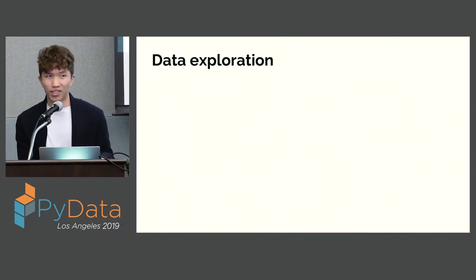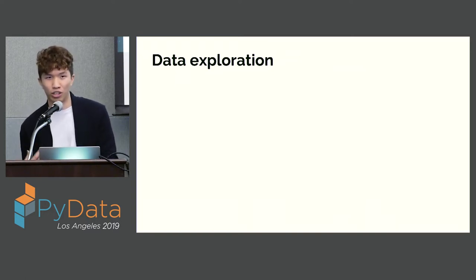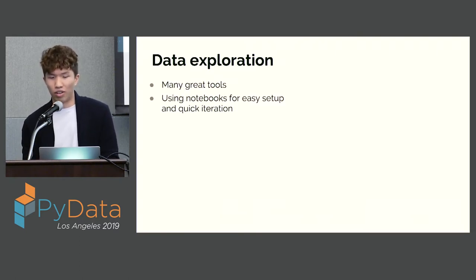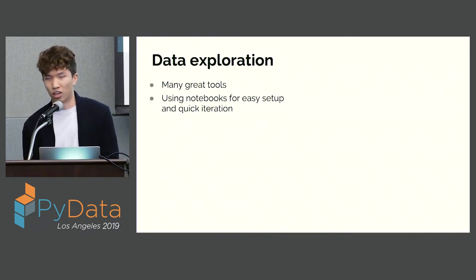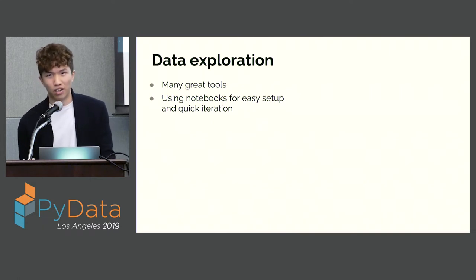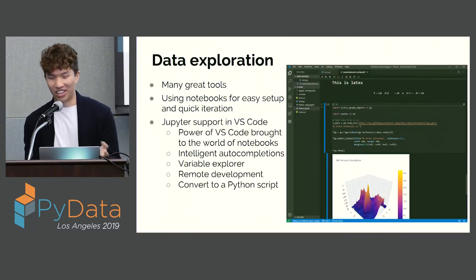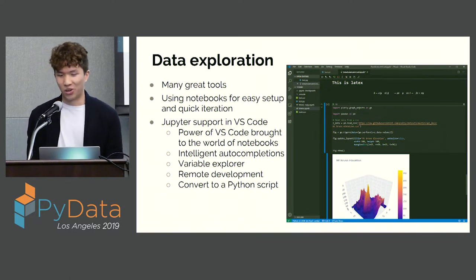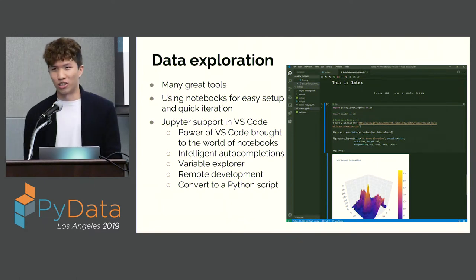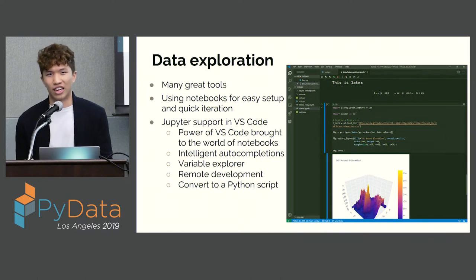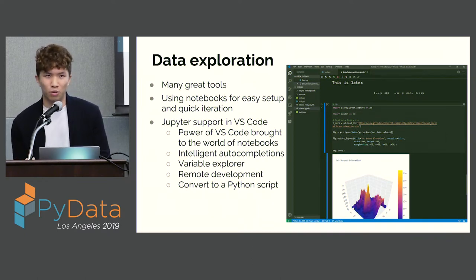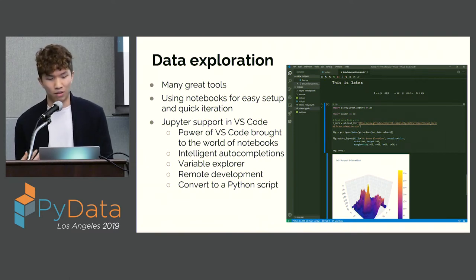Now we've picked the dataset, we want to explore and check it is clean and do any necessary transformations. One of the most popular tools data scientists use is Jupyter Notebooks — it's easy to set up with minimal installs and really good for prototyping because you run each line of code at a time. We're going to use VS Code for this because there's now Jupyter Notebook support in VS Code, giving you IDE features like autocomplete, debugging, and a variable explorer inside notebooks.